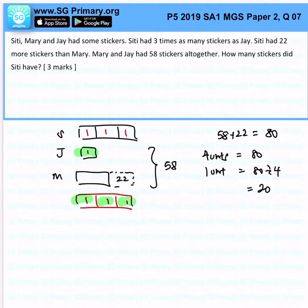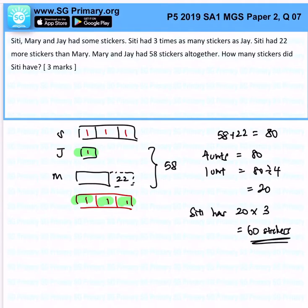So how many stickers does City have? City has 20 times 3, which is 60 stickers. That is the answer for this question.